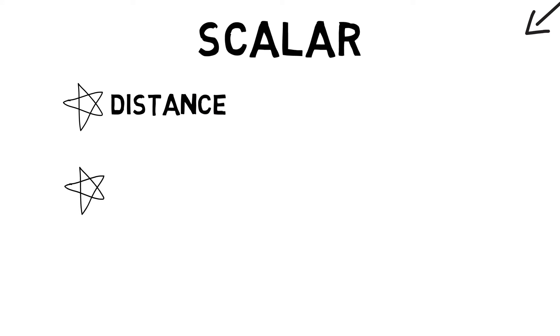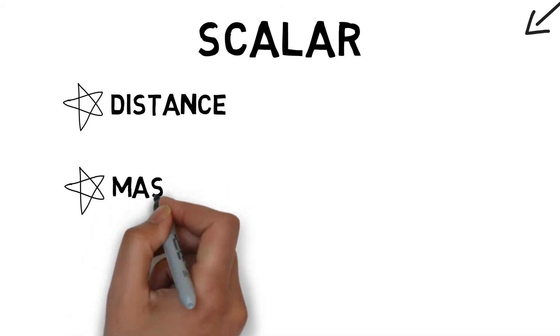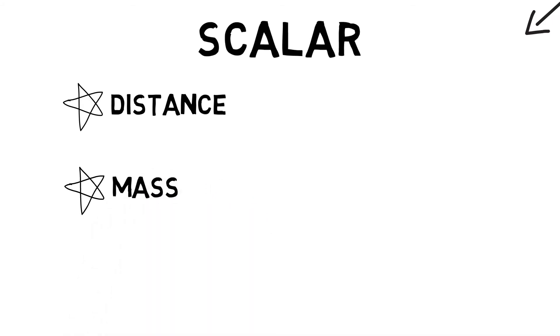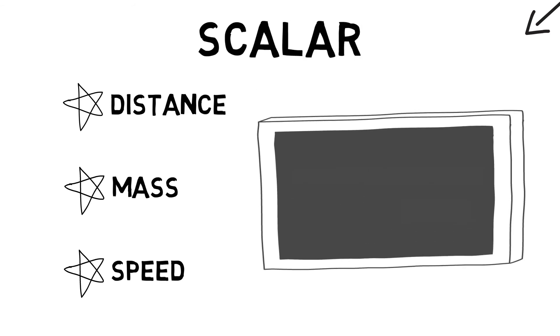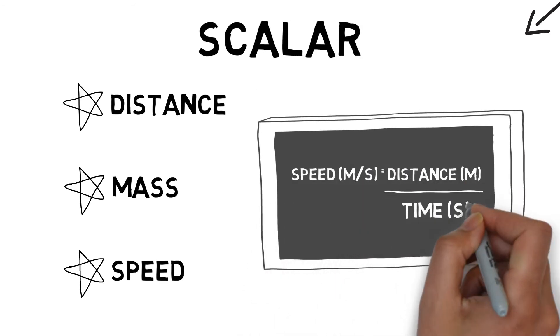Mass is a single value of a quantity of matter, such as 90 kilos. And speed is a single value of the rate of change of distance, such as 30 metres per second. For example, speed equals distance over time.